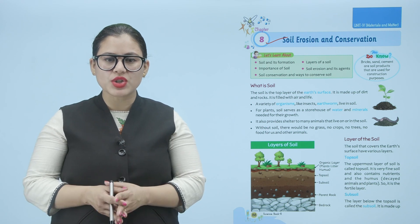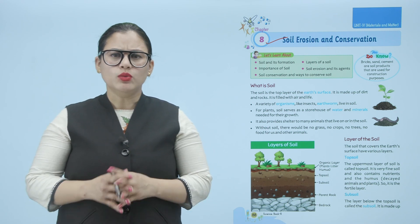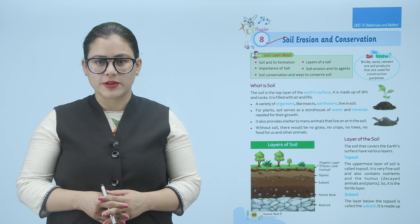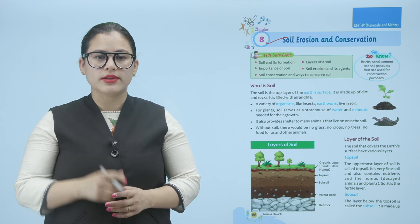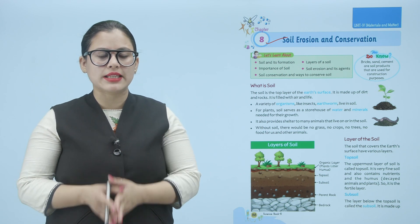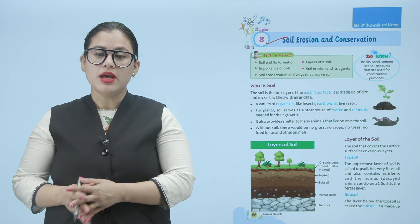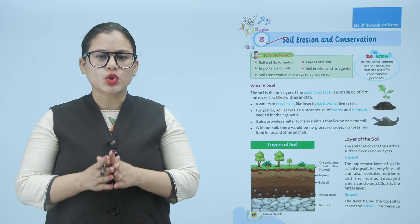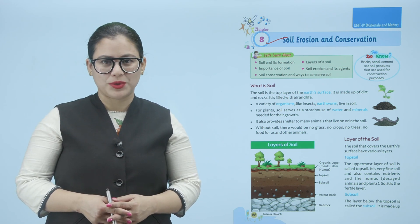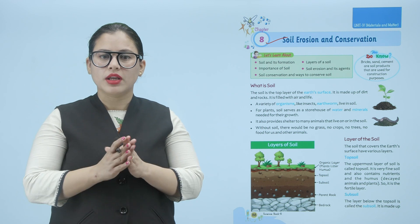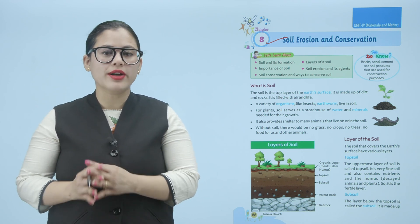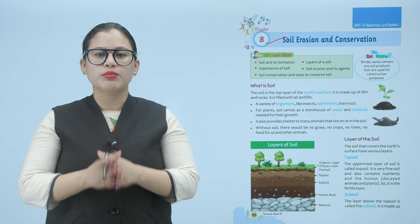What is soil? The soil is the top layer of the earth's surface. It is made up of dirt and rocks. It is filled with air and life. A variety of organisms like insects and earthworms live in soil. For plants, soil serves as a storehouse of water and minerals needed for their growth. It also provides shelter to many animals that live on or in the soil.